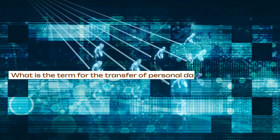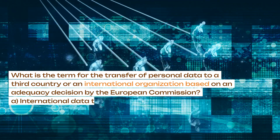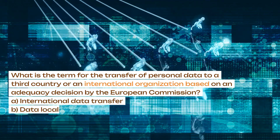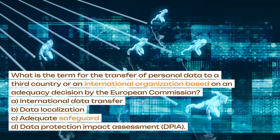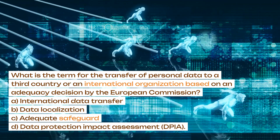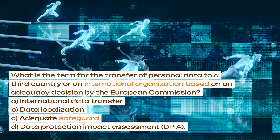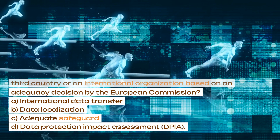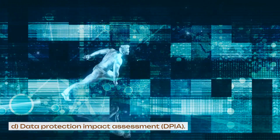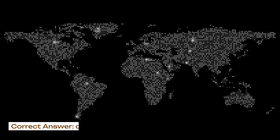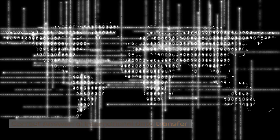What is the term for the transfer of personal data to a third country or an international organization based on an adequacy decision by the European Commission? A. International data transfer. B. Data localization. C. Adequate safeguard. D. Data Protection Impact Assessment (DPIA). Correct answer: A. International data transfer.